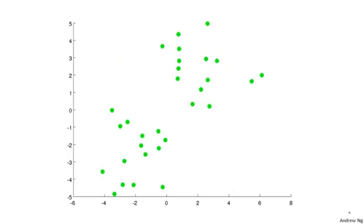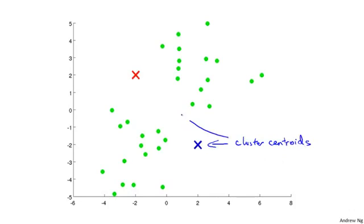The k-means clustering algorithm is best illustrated in pictures. Let's say I want to take an unlabeled data set like the one shown here and I want to group the data into two clusters. If I run the k-means clustering algorithm, the first step is to randomly initialize two points called the cluster centroids. I have two of them because I want to group my data into two clusters.